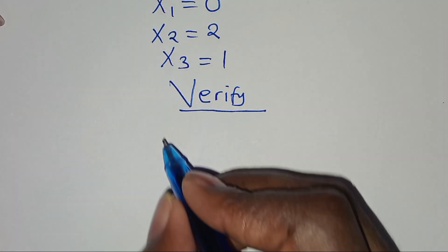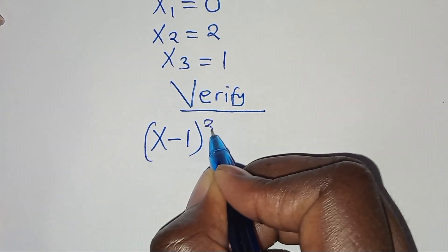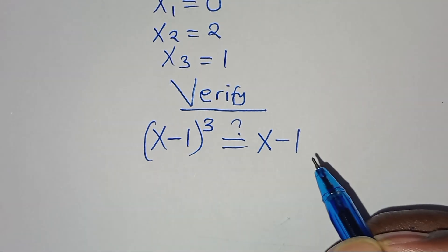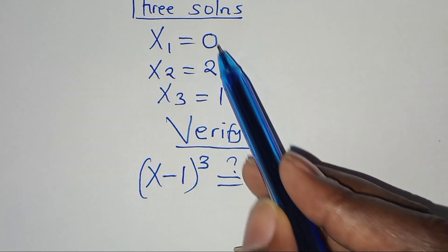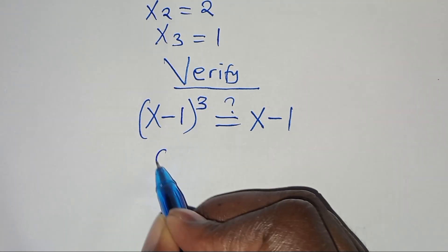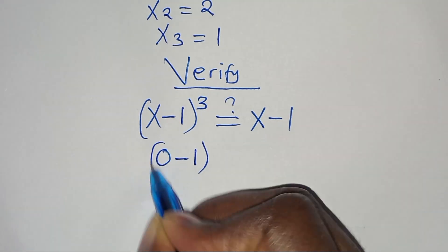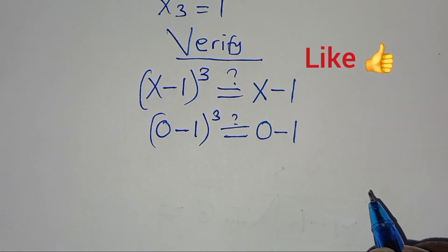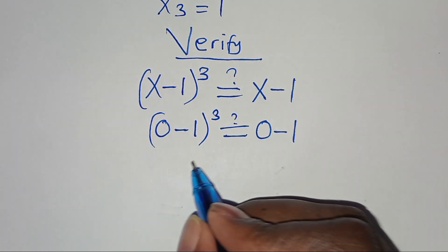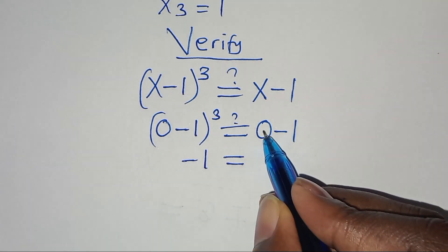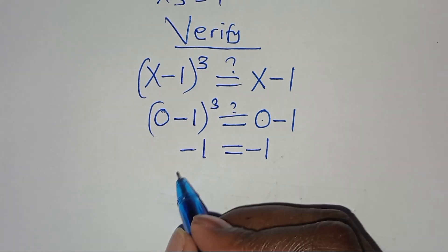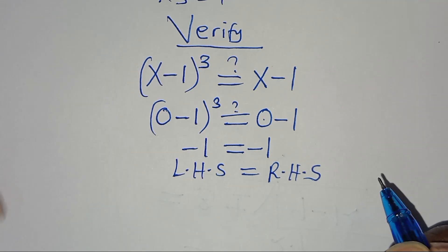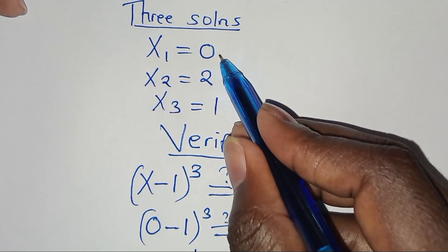So, we have x minus 1 to the power of 3, this is equal to x minus 1. Let's check x1 — x1 is equal to 0 — let's substitute 0. So, we have 0 minus 1 to the power of 3, this is supposed to be equal to 0 minus 1. So, minus 1 to the power of 3 is minus 1, which is equal to 0 minus 1, which is minus 1. The left-hand side is equal to the right-hand side, and this verifies that x1 satisfies the equation.